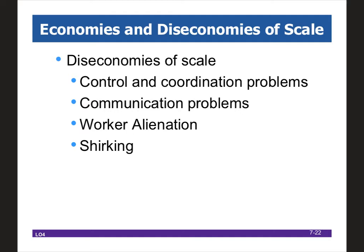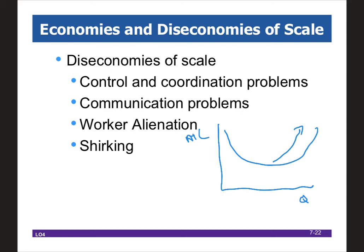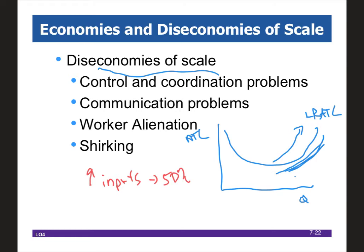A situation demonstrating diseconomies of scale would show a section where the long-run ATC is definitely increasing over greater and greater quantities. The definition: if I increase my inputs by 50% but my outputs only increase by 10%, I have diseconomies of scale. I've generated a lot more inputs into the process but haven't gotten significantly greater outputs.